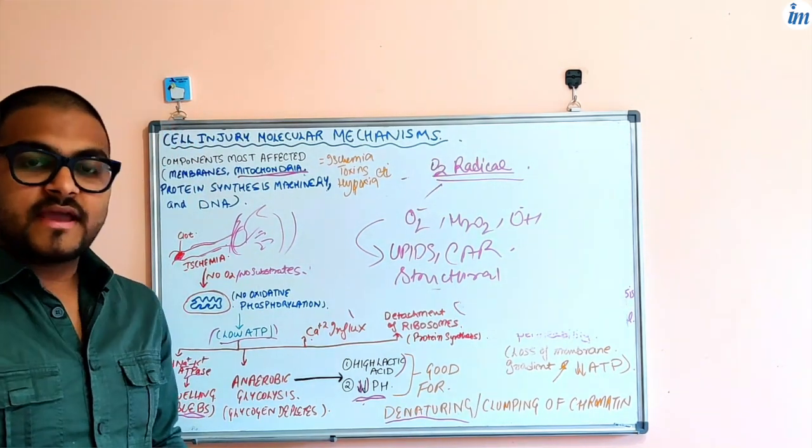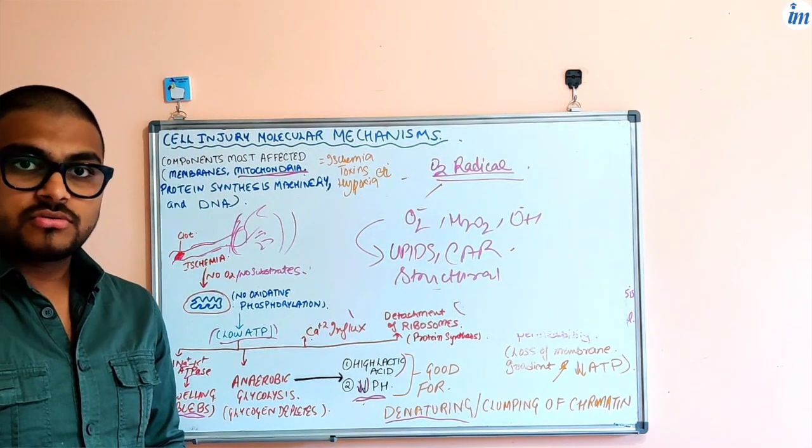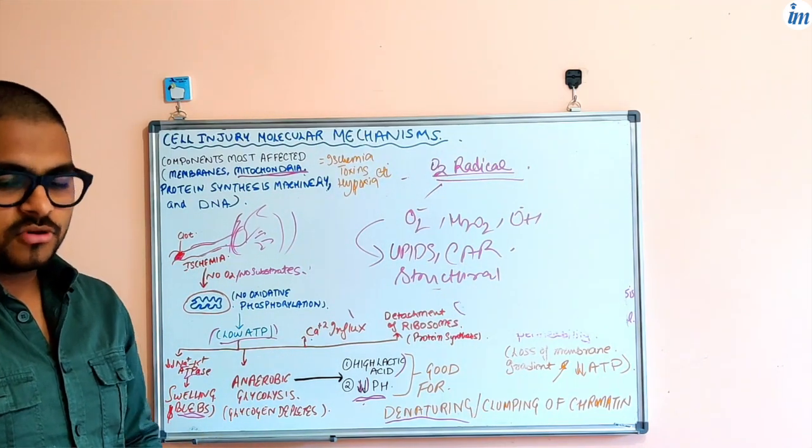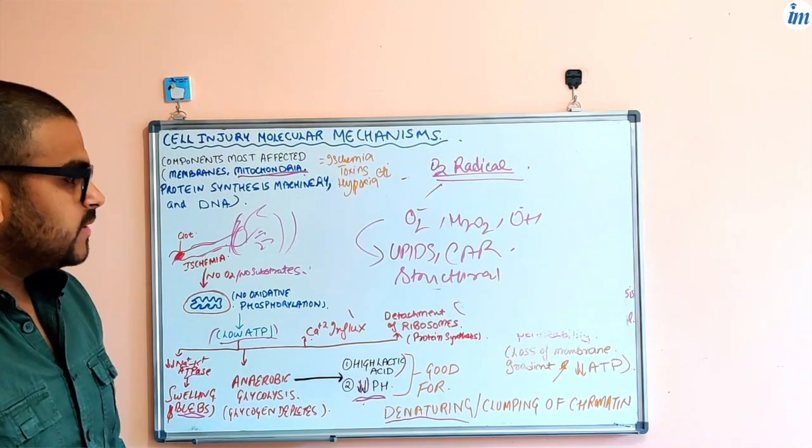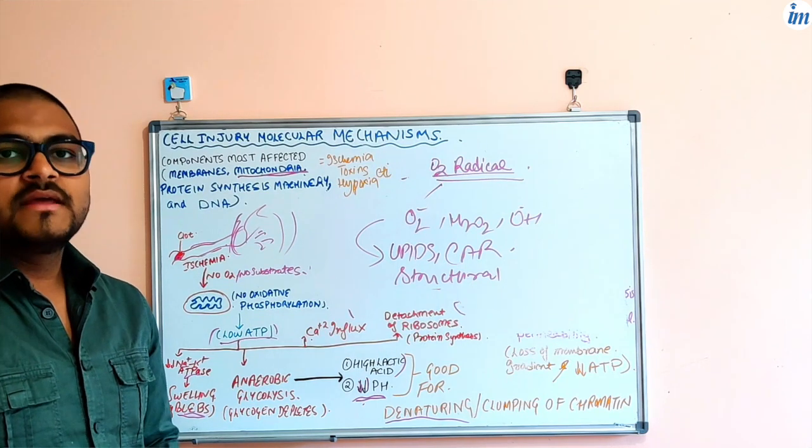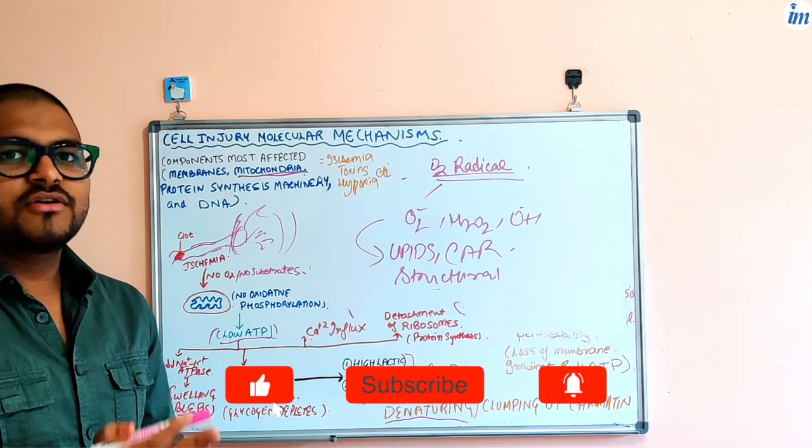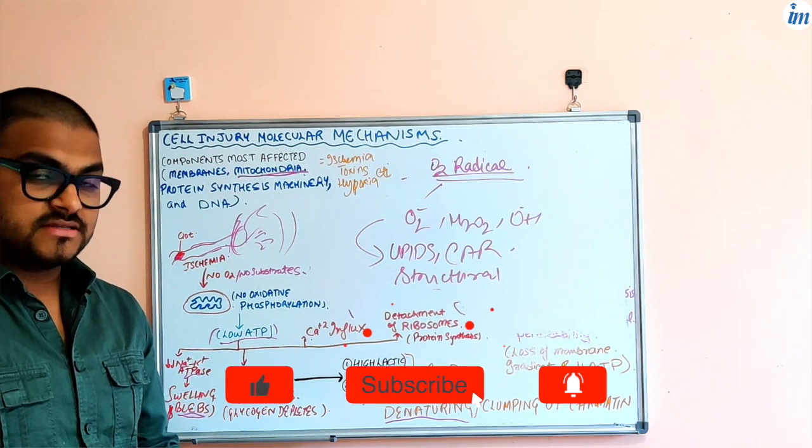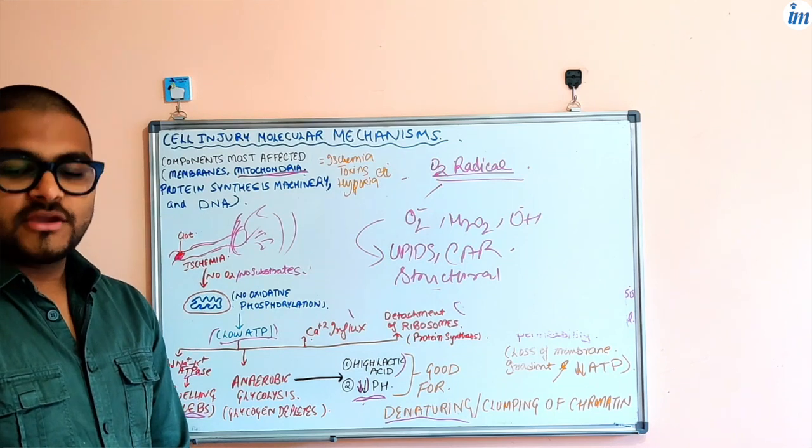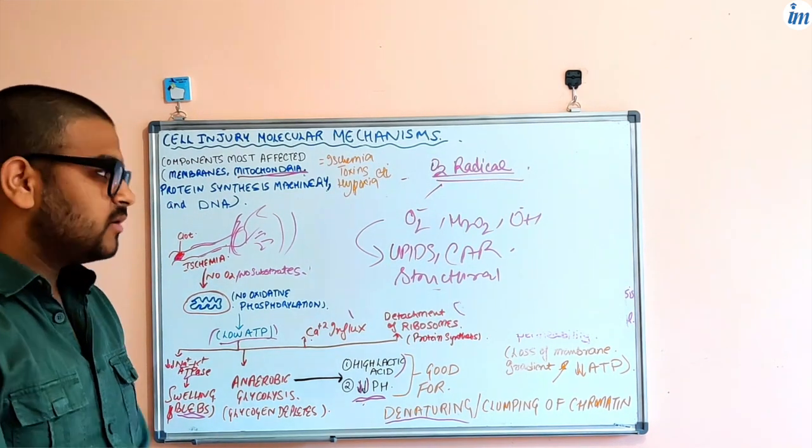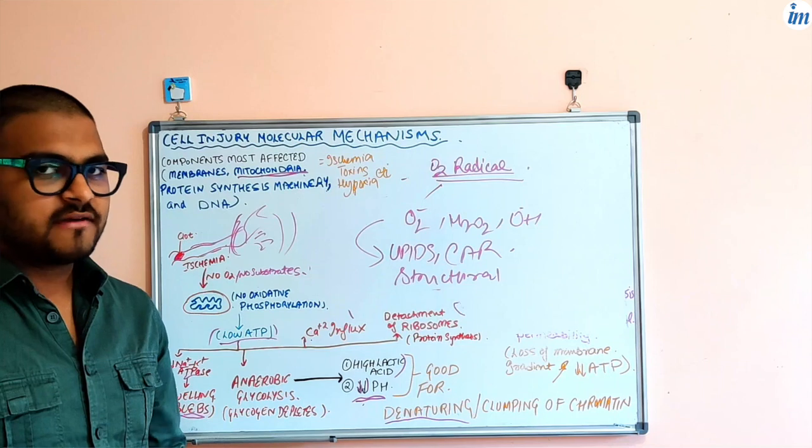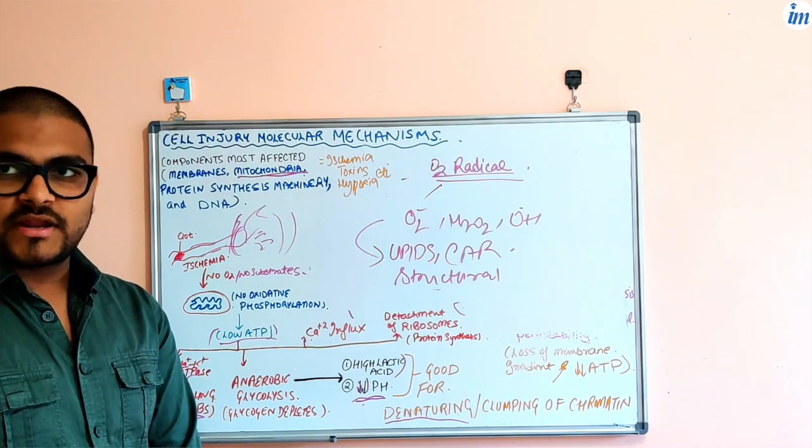This is how in short the injury is taking place in the cell. You should be very clear about these mechanisms because if you are clear about them, it will make your further understanding of necrosis and apoptosis easier, and we will discuss them in a separate video. Thank you everybody for watching and keep on watching my series of videos on pathology. Subscribe, comment, and whatever questions you have you can comment below. Have a nice day.